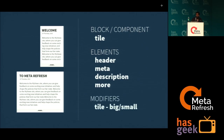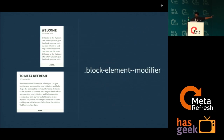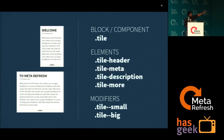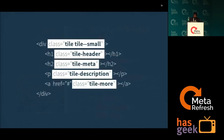Then there are modifiers — modifiers are the different presentation states of a particular component. For example, the tile has two different presentation states: big and small. So what I did is apply the BEM syntax for writing CSS names. First you write the block name, then double underscore, then the element name, then double hyphen and the modifier. So rewritten: the block is '.tile', the element is '.tile__header', and the modifiers are '.tile--small' and '.tile--big'. Then the HTML will look like this, and if I give this HTML to anybody, they can easily read it and understand what this piece of HTML means.